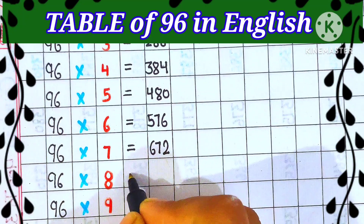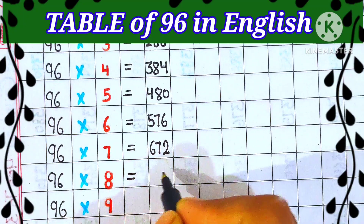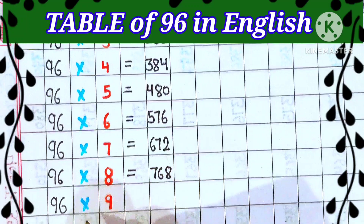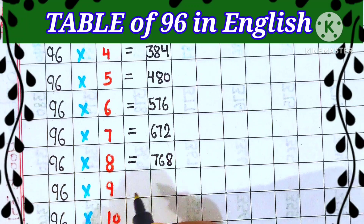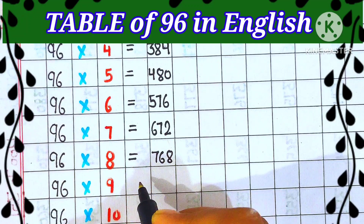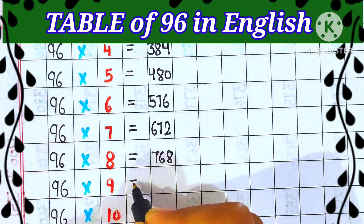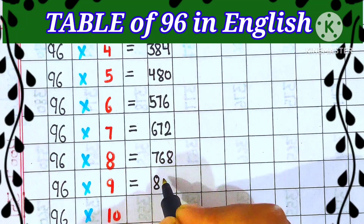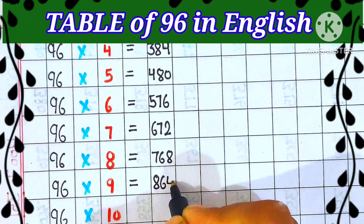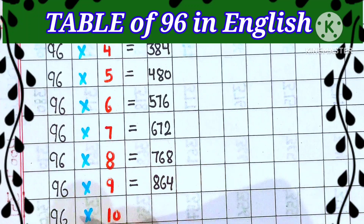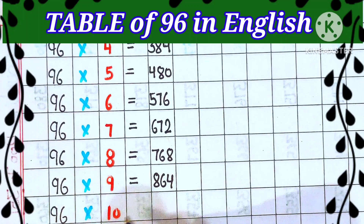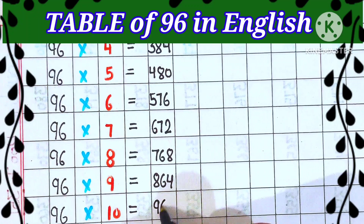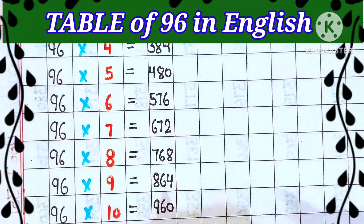96 eights are 768, 96 nines are 864, 96 tens are 960.